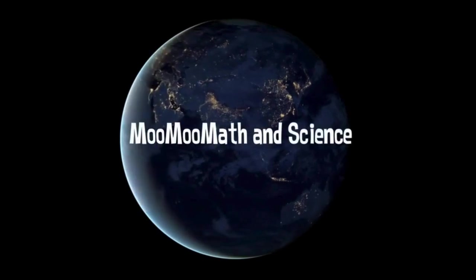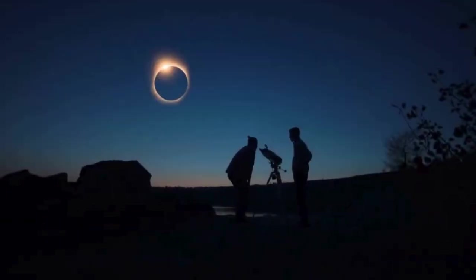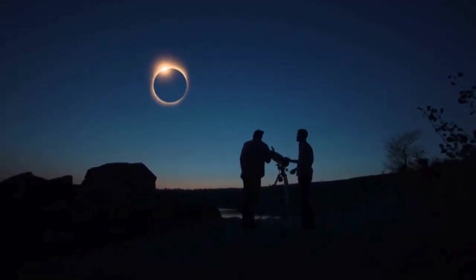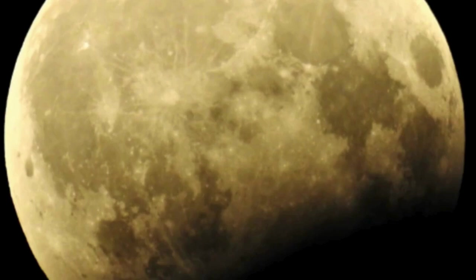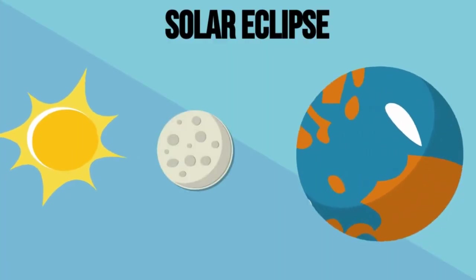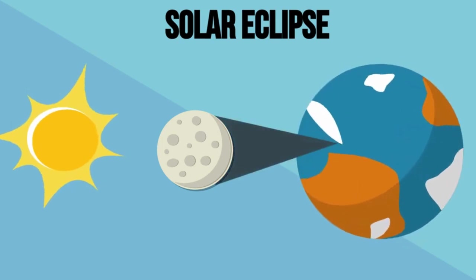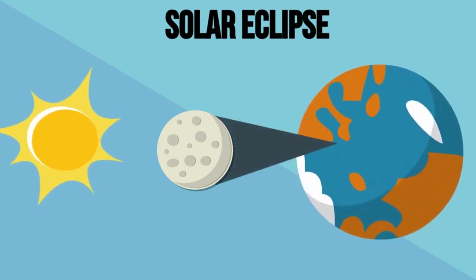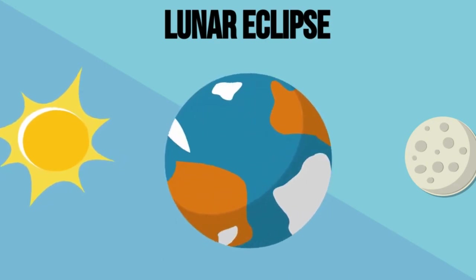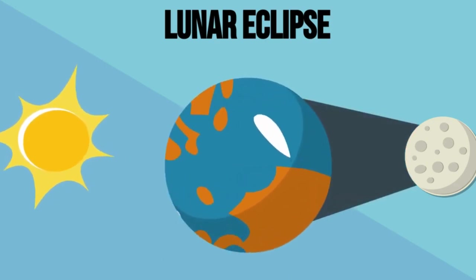Welcome to MooMoo Math and Science. In this video let's talk about solar and lunar eclipses. When the shadow of one celestial body like the moon or the earth falls on another, an eclipse occurs. A solar eclipse happens when the moon comes between the earth and the sun and the shadow of the moon falls on part of the earth. A lunar eclipse happens when the earth comes between the sun and the moon and the shadow of the earth falls on the moon.